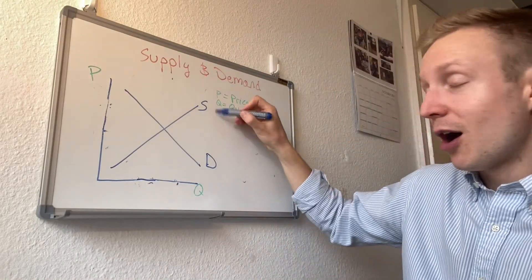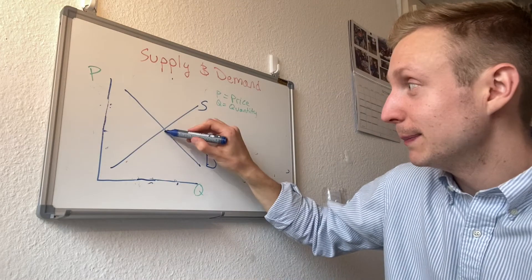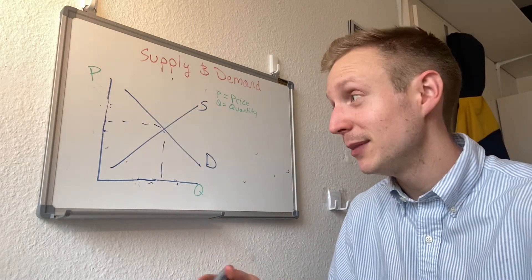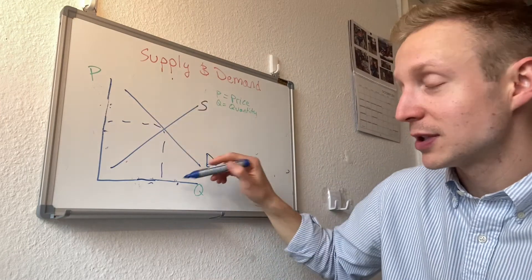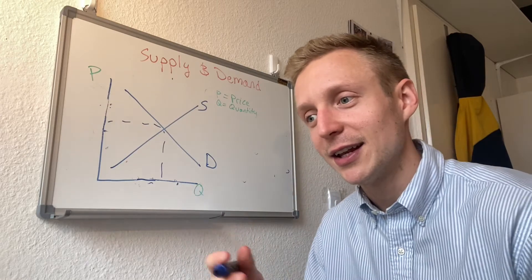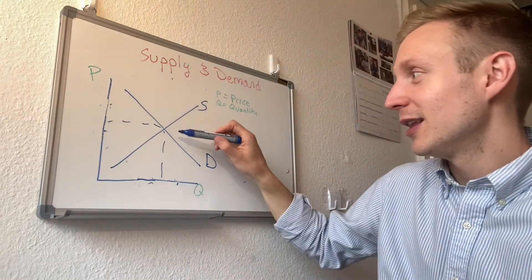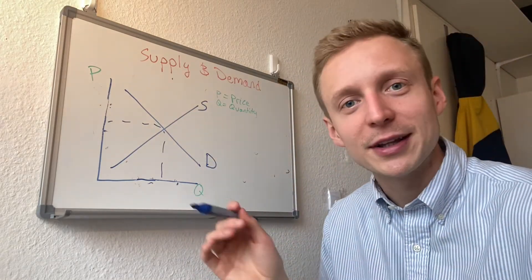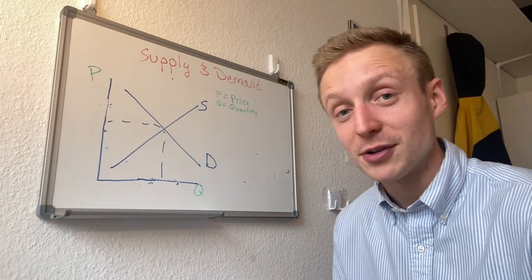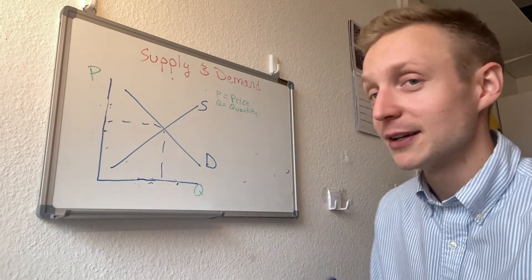And where they meet is the equilibrium, right? So where supply and demand meet is what will set the price and what will set the quantity - quantity demanded, quantity supplied. And the idea is that in a perfect free market, they'll figure this out on their own perfectly and it will fit the needs of everybody. Of course, we know the real world is always more complicated, but that's the idea.